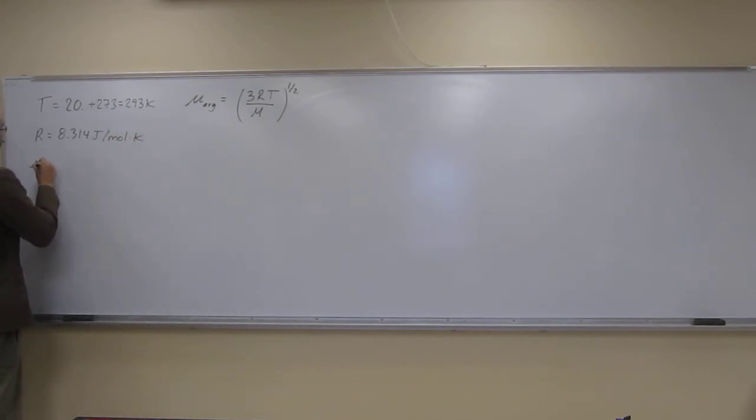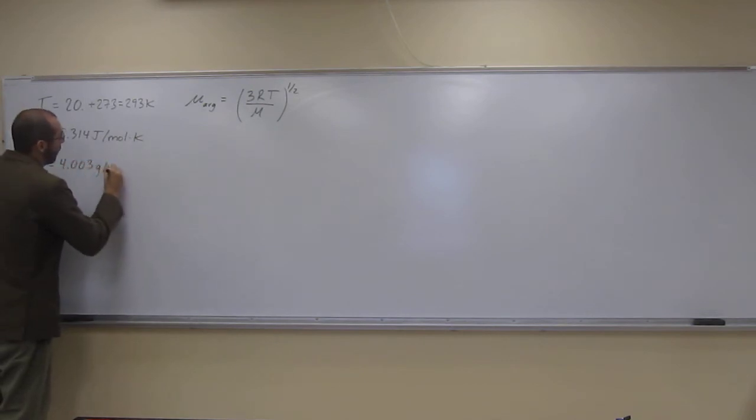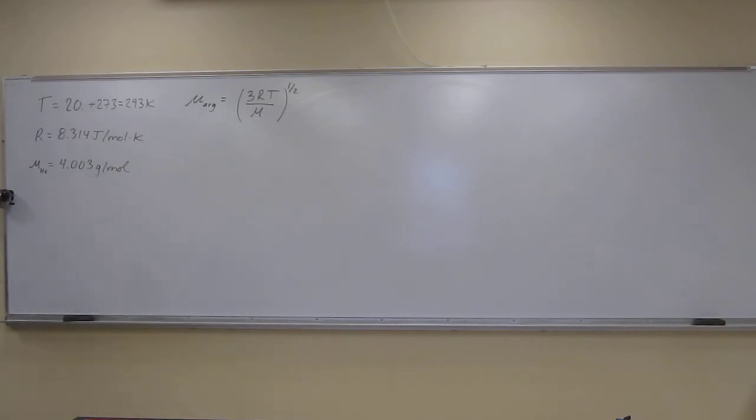So molar mass, so what did they say? This was helium, so we look up at our periodic table, it's going to be 4.003 grams per mole. We're going to have to get rid of joules and convert this to kilograms as well. You'll see that in a second.